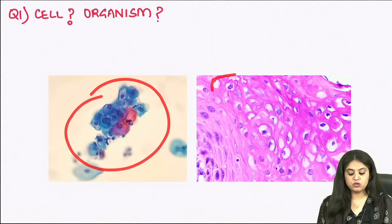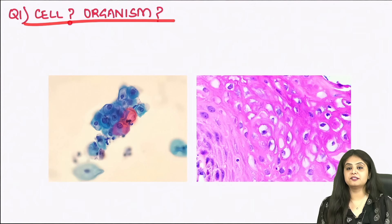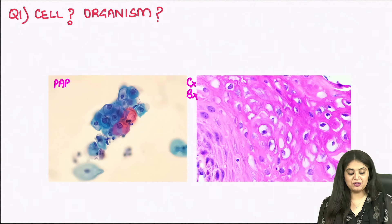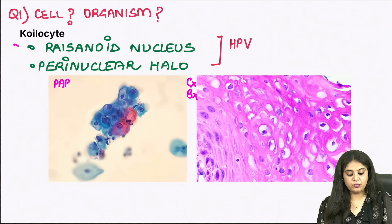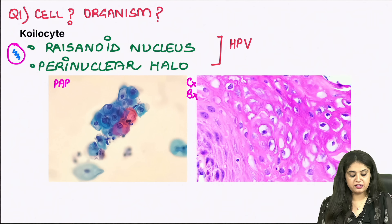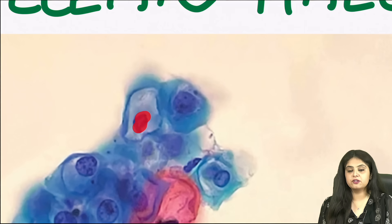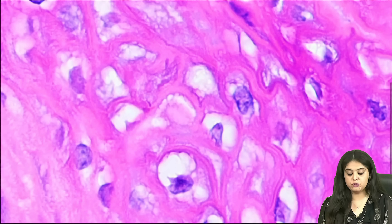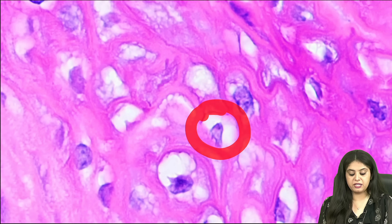What is the cell shown over here, and the organism leading to it? If you need a history, this is a pap smear and a cervical biopsy — so we are talking about the koilocyte. A koilocyte is defined as a cell with a very dark raisinoid nucleus, like a shrivelled raisin, and around the nucleus there is a whitish area known as perinuclear halo. Zooming in, I can see a shrivelled irregular nucleus with a perinuclear halo on both pap smear and cervical biopsy.